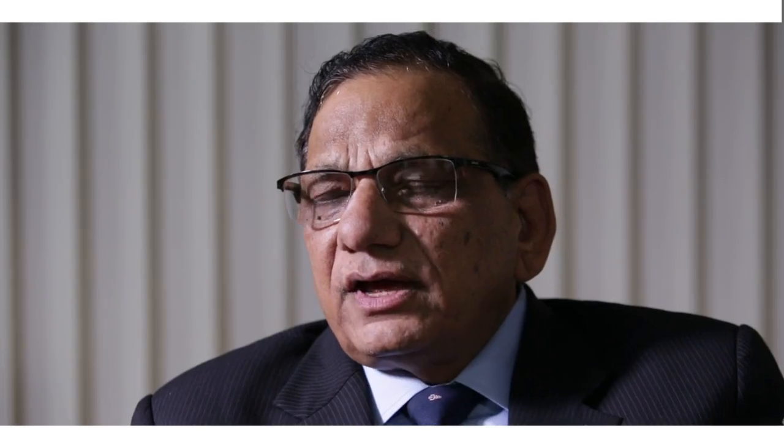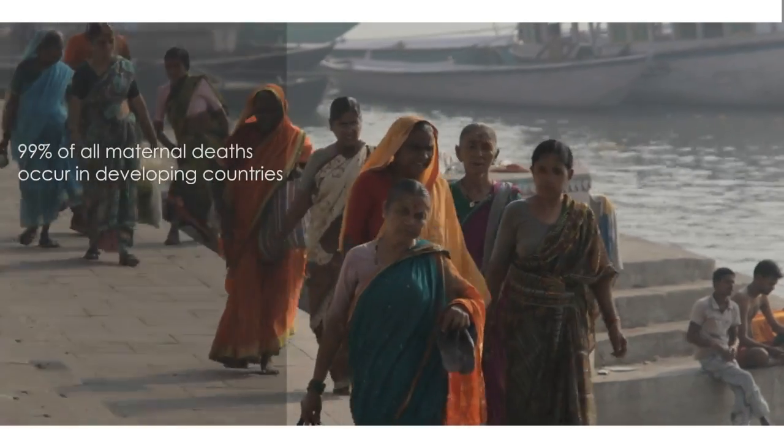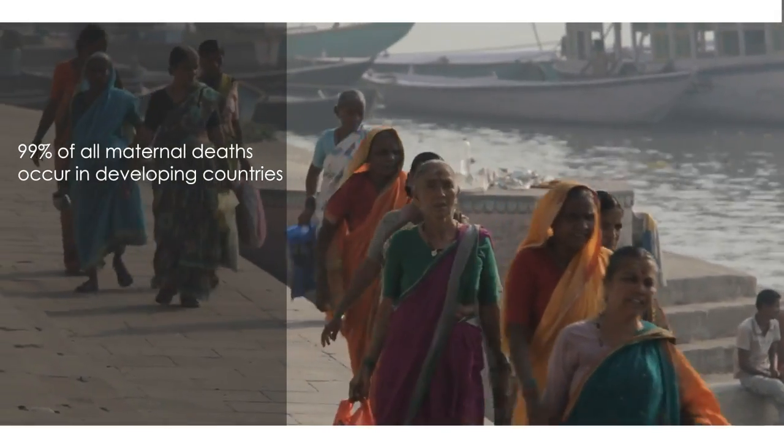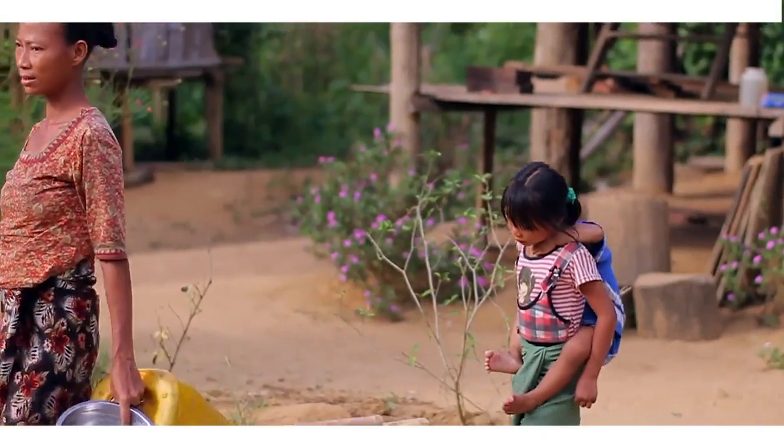The metric used is maternal mortality ratio, which reads as maternal deaths per 100,000 live births. As of 2018, as many as 830 women die from preventable causes related to pregnancy and childbirth every day. 99% of all maternal deaths occur in developing countries, and the mortality rate is higher among women living in rural areas and those belonging to poor communities.